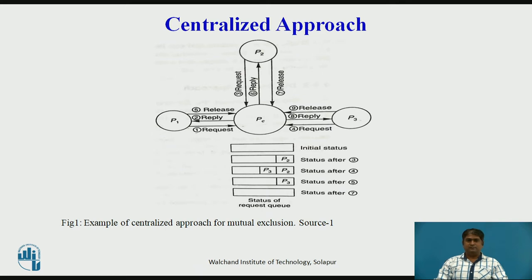Again, suppose that while P1 is still in the critical section, P3 also sends a request to PC asking for permission to enter the same critical section. Obviously, P3 cannot be granted permission, so no reply is sent immediately to P3 by PC and its request is queued. Now, suppose P1 exits the critical section and sends a release message to PC. On receiving the release message, PC takes the first request from the queue of deferred requests and sends a reply message to P2, granting it permission to enter the critical section.